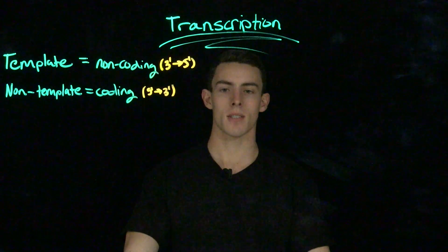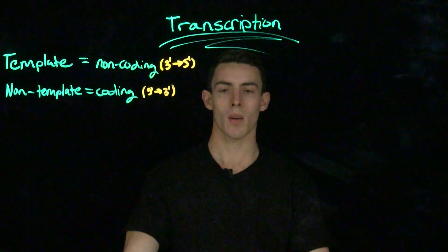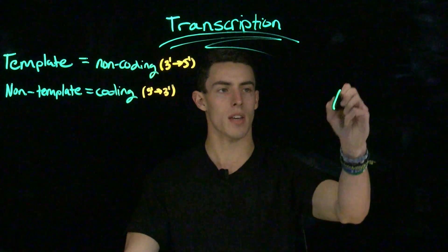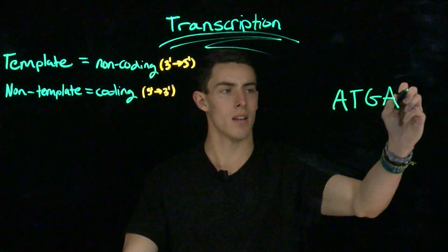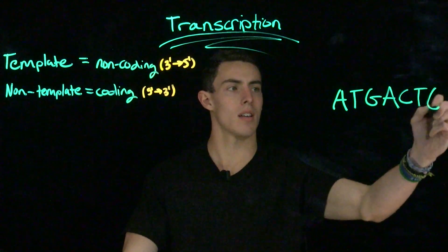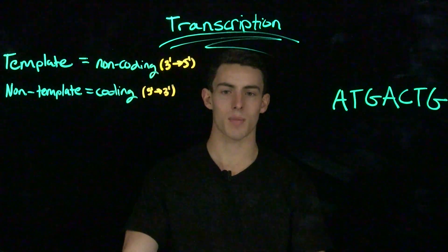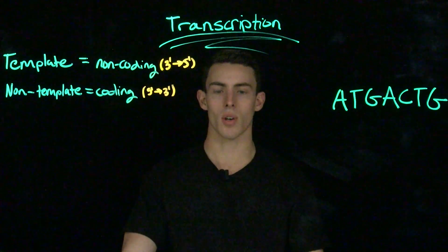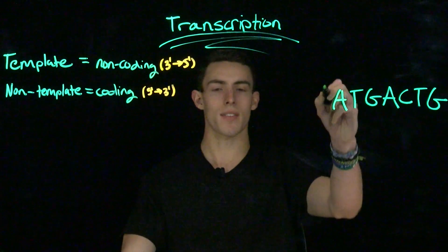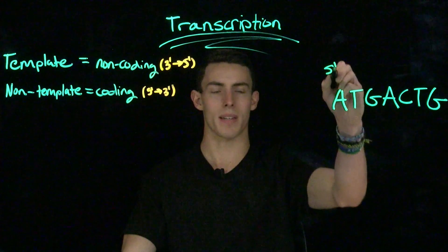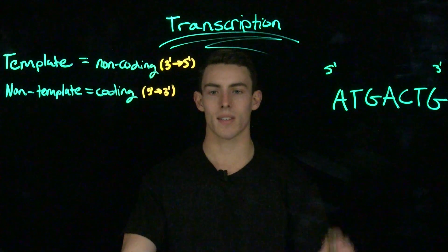Now let's practice. Let's imagine we have a transcriptional unit with a template strand of the sequence A-T-G-A-C-T-G. We want to find the mRNA molecule synthesized by this, but where do we start? How do we know the directionality? Well, remember that the left side will always be the 5' end and the right side will always be the 3' end, unless otherwise stated.